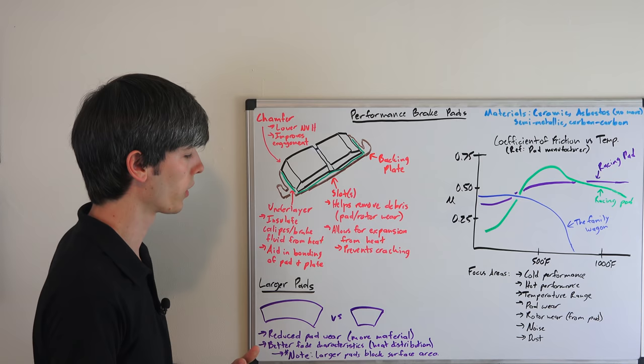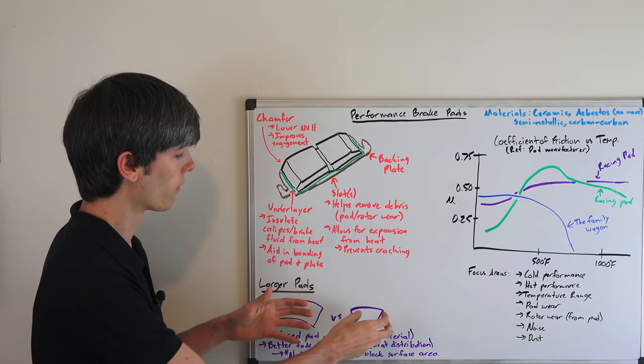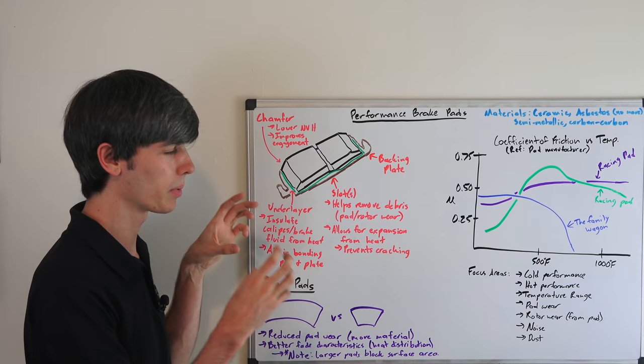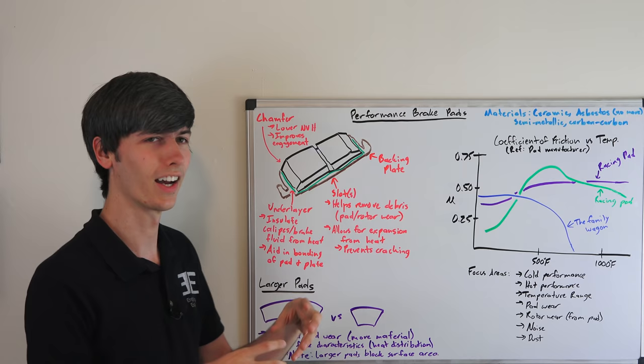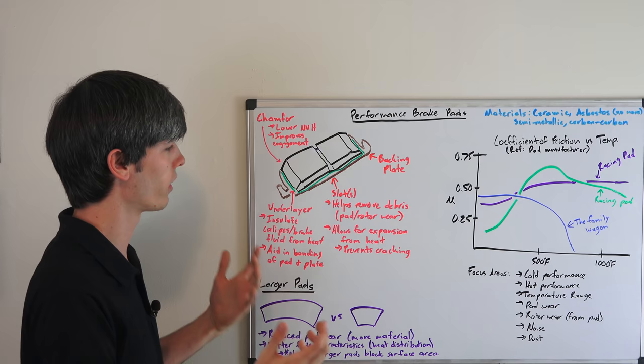Now the one thing to note is that if you do use larger pads, you're going to be covering up that section of the brake disc, so you're not going to have as much airflow over that section of the brake disc and it could impact the cooling of the brake disc. So it's not always necessarily the best. It's not like you want just a massive caliper that goes all the way around the entire disc, as you wouldn't have anywhere to reject the heat. So you do need some airflow, but ultimately larger pads are going to give you less pad wear and better fade characteristics.